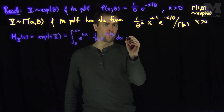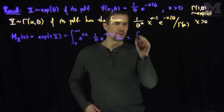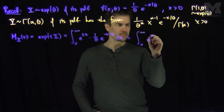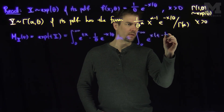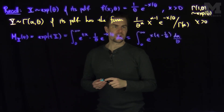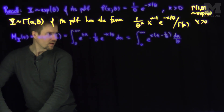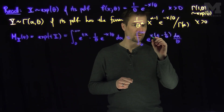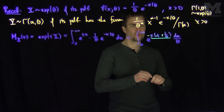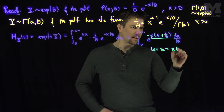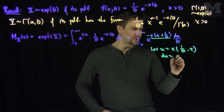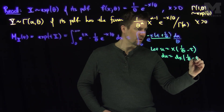We can combine the exponents and keep (1/θ) with dx. This gives the integral from zero to infinity of e^(x(t − 1/θ)) · (dx/θ). Now let's change variables: let u = x(1/θ − t), pulling out a negative sign, so du = (1/θ − t) dx.